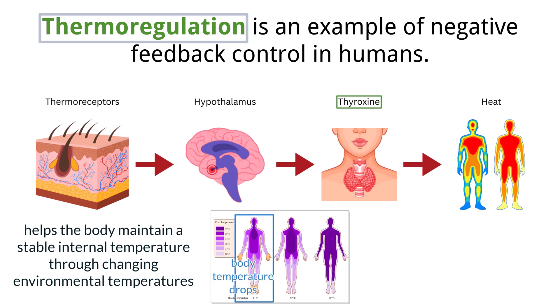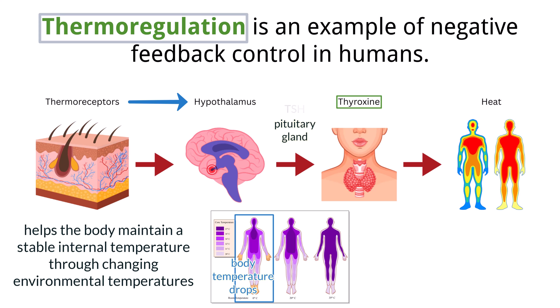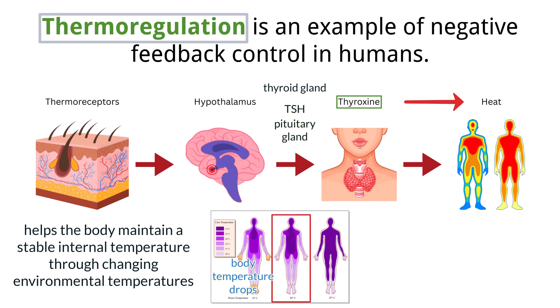When body temperature drops from the set point of around 37 degrees Celsius, peripheral thermoreceptors in the skin detect the change and send signals to the hypothalamus, the brain's temperature-regulating center. The hypothalamus processes this information and coordinates a response involving the pituitary gland. The pituitary gland releases TSH, or thyroid-stimulating hormone, which then stimulates the thyroid gland to release thyroxin. Thyroxin increases the metabolic rate of cells, generating more heat throughout the body. As body temperature rises, the response is reduced and the negative feedback loop is complete.